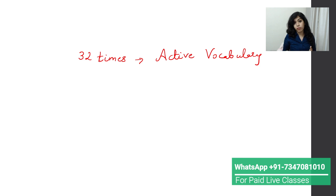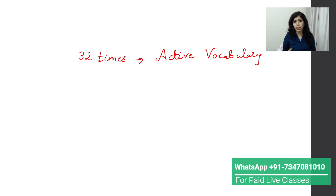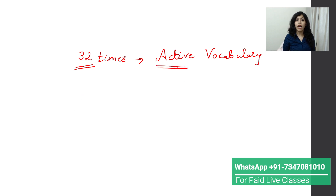Active vocabulary is the one which we have already used regularly. Simply speaking, use any word 32 times in writing or speaking, and it will come under your active vocabulary. If you feel you can't remember vocabulary or words, try using a difficult word 32 times and you will see the result. I'm giving you surety of this.